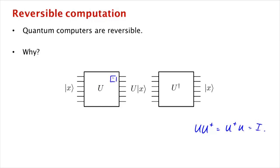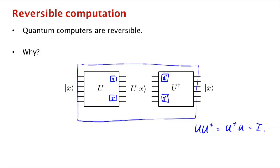In fact, something even more is true: if you look at the gates inside U, in U-dagger you just take the corresponding gates G-dagger, G-prime-dagger, and so on, in the opposite order. When you put these two circuits together, each gate annihilates its conjugate transpose counterpart, and so the two circuits completely annihilate each other, leaving the identity map which just maps X to itself.